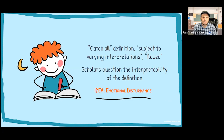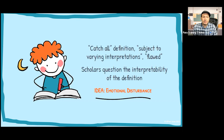The definition as put forth by IDEA is questionable. It's a catch-all definition. It's really hard at the federal level to set policy and have it apply equally to all people everywhere. Our goal is equality and equity, but it's not always the case in practice. This catch-all definition is subject to varying interpretations — it's a flawed definition, because there's no way we can account for all of the variations in individuals across a 300-million-person population such as we have here in the United States.